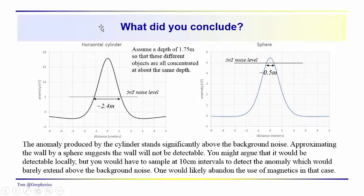Over here we have about 2.4 meters above the background. So if you were using the sphere to evaluate whether a magnetic survey would work for you, you would probably abandon magnetics in favor of something else—ground penetrating radar maybe. So what did you conclude?